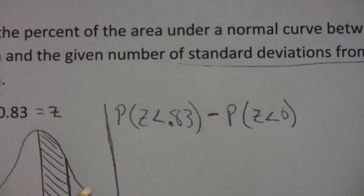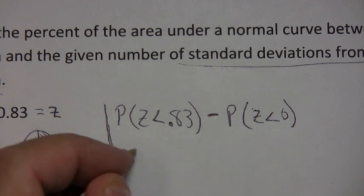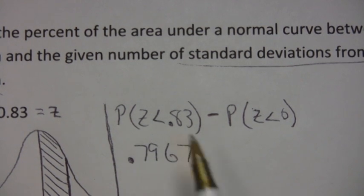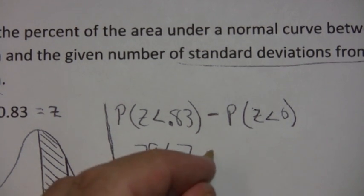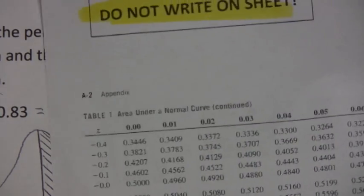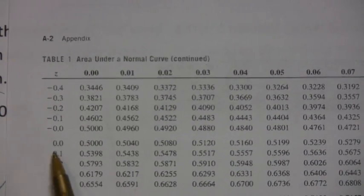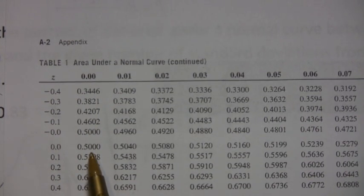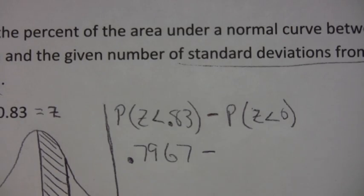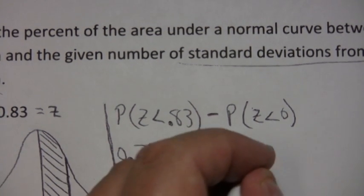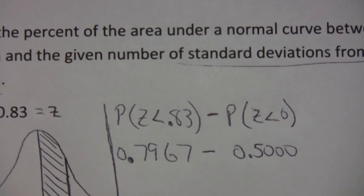0.7967. And remember, you got that from the table by looking up the rightmost number. Then you look up the leftmost number, which is 0. So you go to the table, look again. Well, 0, 0 is right here, is 0.5. So the probability that Z is less than 0 is 0.5. And subtract.